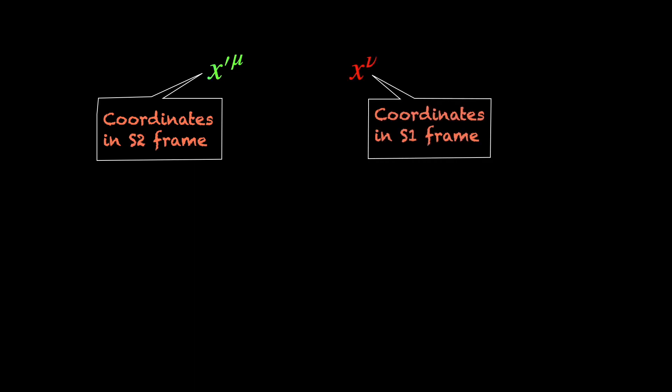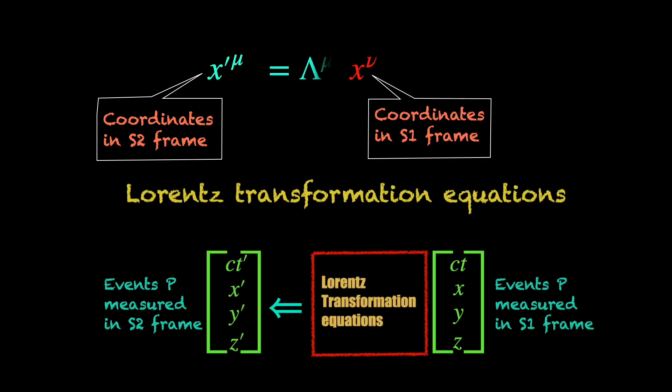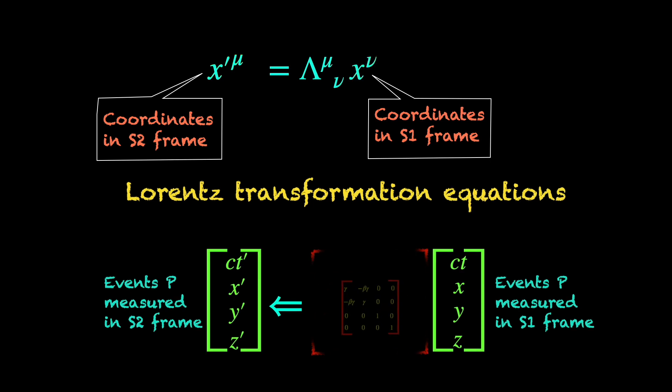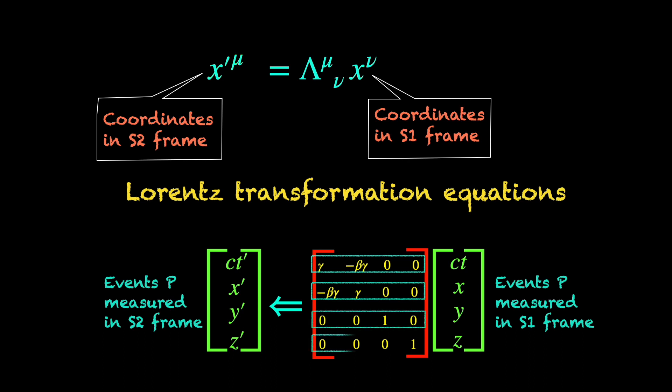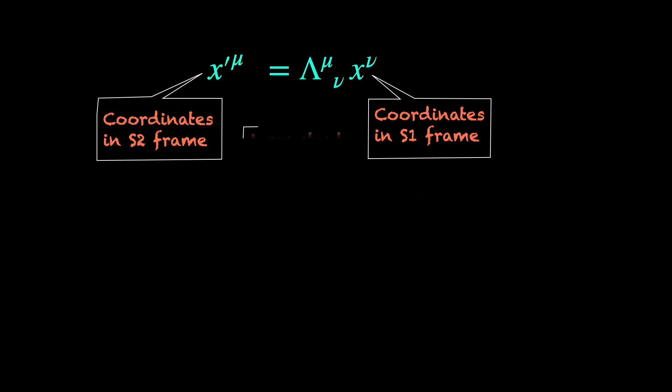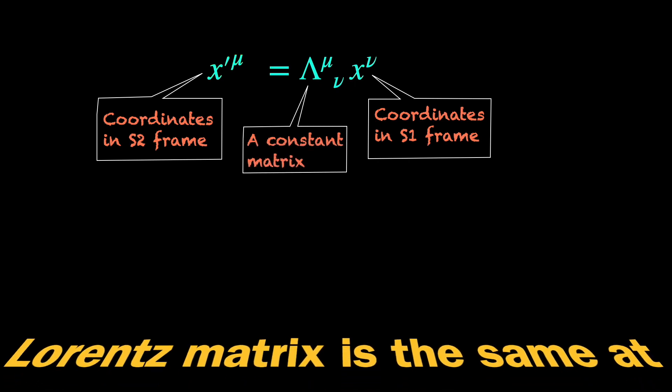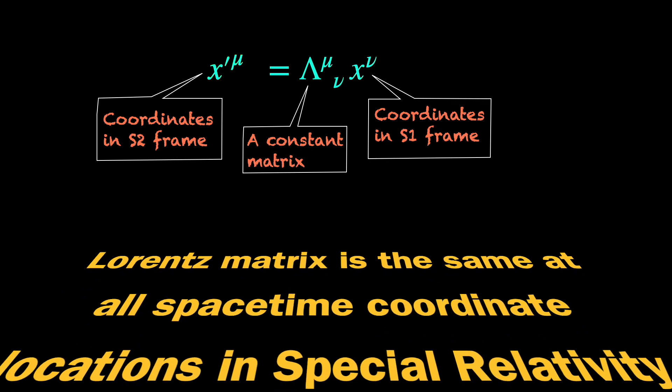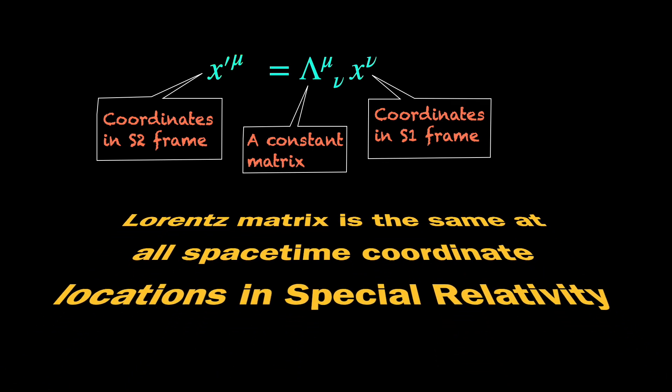We already know how the primed and unprimed coordinates of an event in S1 and S2 frames are related by the Lorentz transformations, right? Now, all the entries in the Lorentz matrix lambda are either 1 or 0 or made of the constant relative velocity beta which is b by c, that is velocity in units of light speed between S1 and S2 frames. So, lambda is a constant matrix. It remains the same at event P and at event Q. In fact, at any other event for that matter.